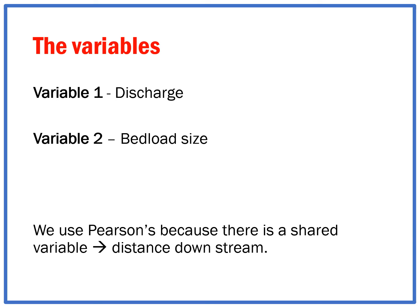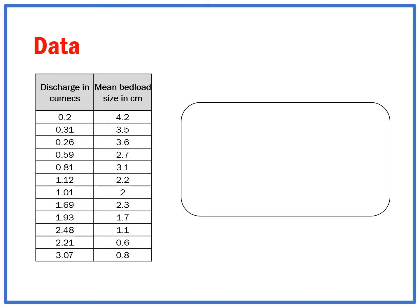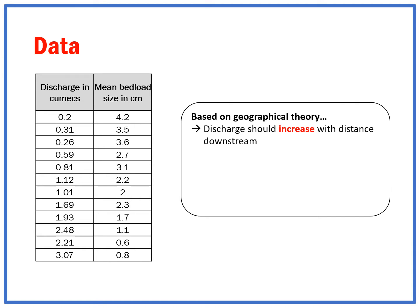We use Pearson because there is a shared variable between the two data sets, the shared variable being distance downstream. This data was collected at various sites. So here is the data. Based on geographical theory,